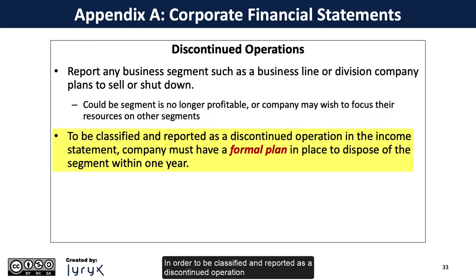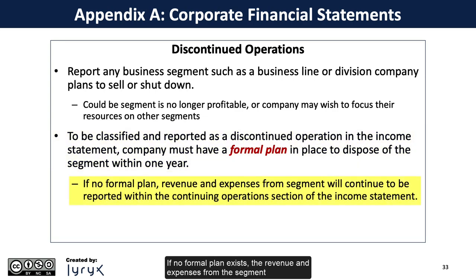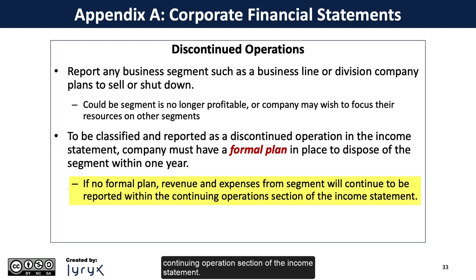In order to be classified and reported as a discontinued operation in the income statement, the company must have a formal plan in place to dispose of this segment within one year. If no formal plan exists, the revenue and expenses from the segment will continue to be reported within the continuing operations section of the income statement.